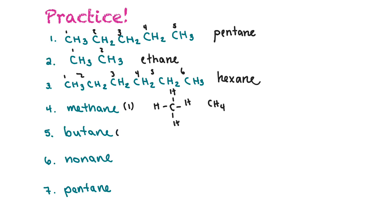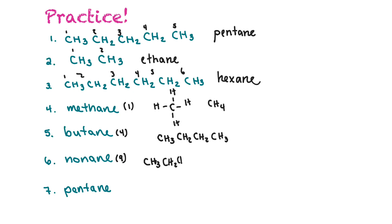For butane, you could draw it in condensed form: CH3, CH2, CH2, CH3. And nonane is nine carbons, so in condensed form: CH3, then seven CH2 groups in the middle.